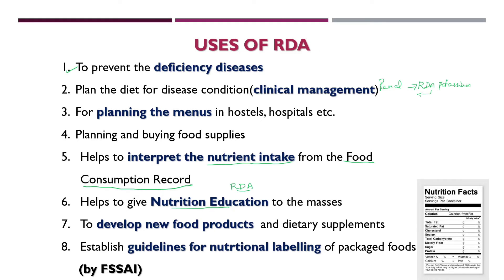Nutritional labeling on packaged foods — such as the nutrition facts panel showing how much carbohydrate, cholesterol, protein, and dietary fiber are in a serving — is made using RDA as a base. Based on RDA, these nutrition facts are calculated. These are all the uses of RDA.